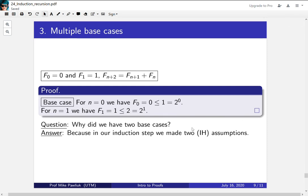the answer is because in our induction step, we made two induction hypothesis assumptions. So because we need to go back two steps, then the base case should have two base cases. It gives us two things to start from. One way of thinking about this is when you define the Fibonacci numbers, you need two starting cases so that you can go up to the next one. So you've got to start with two things.